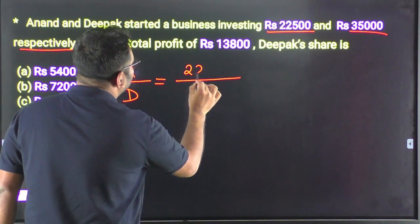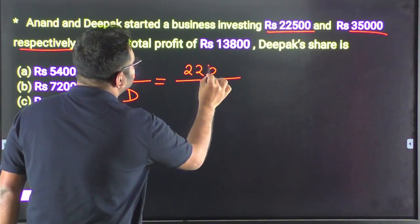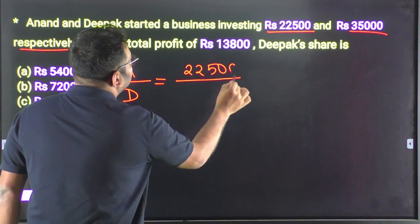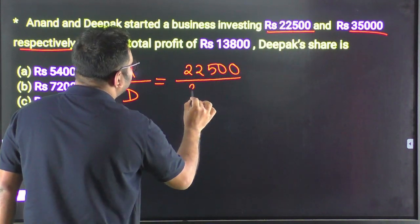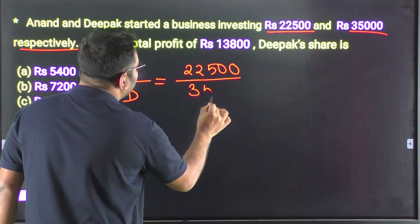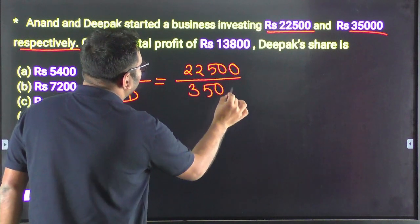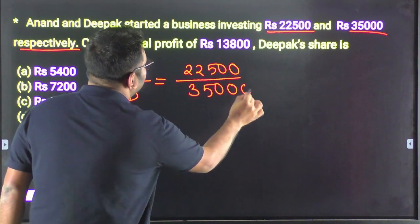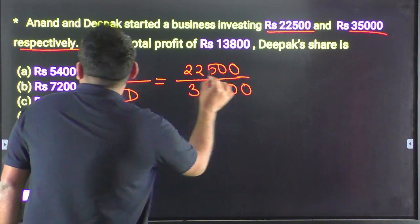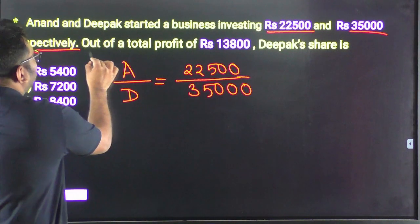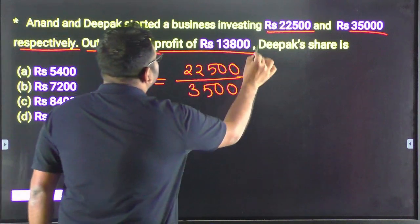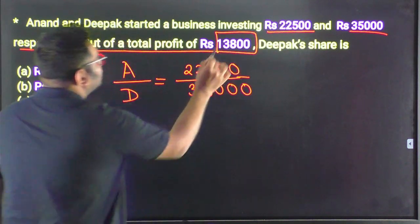Anand invested Rs. 22,500 and Deepak invested Rs. 35,000. Out of a total profit of Rs. 13,000, what is Deepak's share?